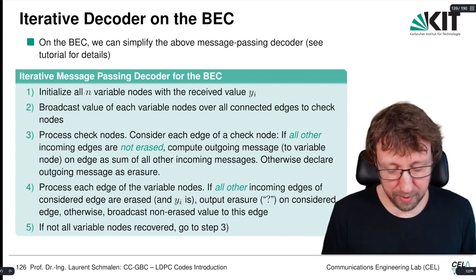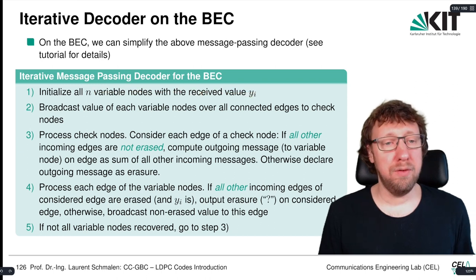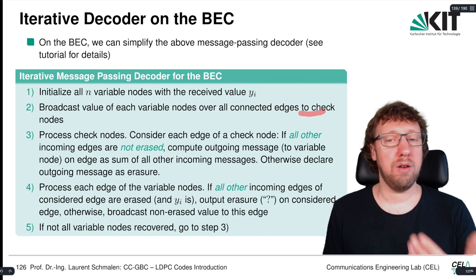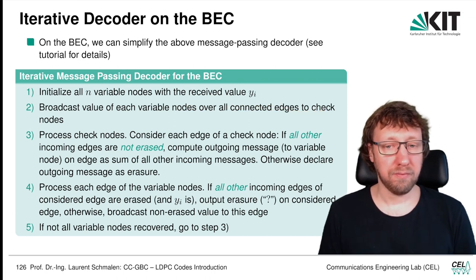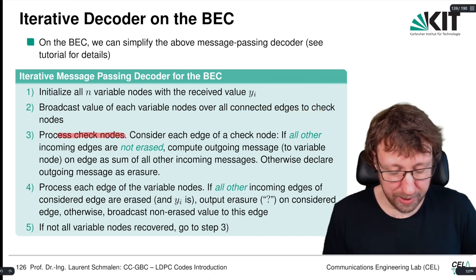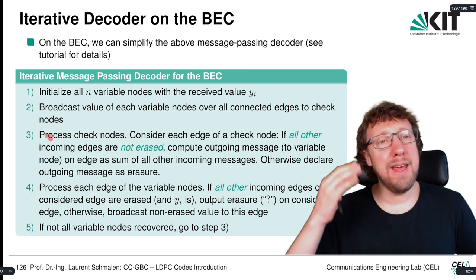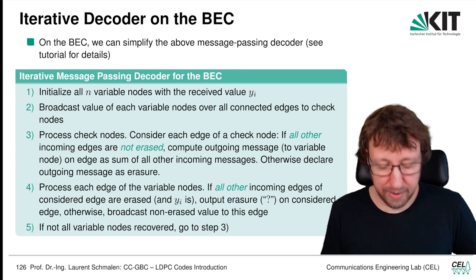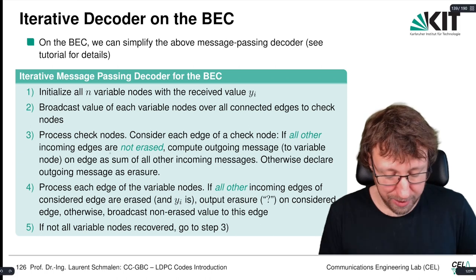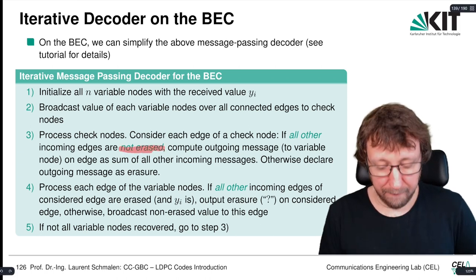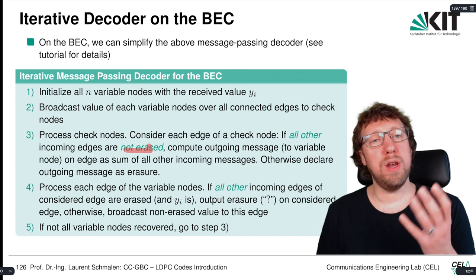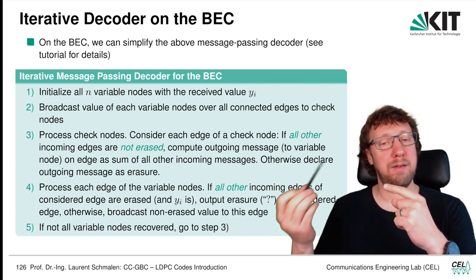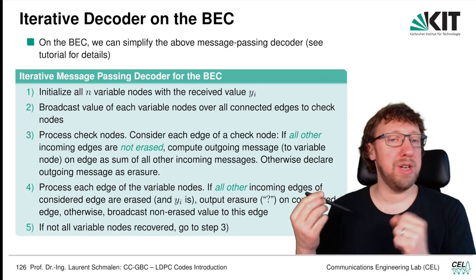We initialize everything with the received value. Then we broadcast the value of the variable nodes to all the connected check nodes. Then we process the check nodes — looking at each edge of the check node. If all the other edges are not erased, then we know the values and we can calculate the missing value, the missing bit, in order that the parity check is fulfilled.